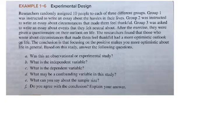In Example 1-6 on experimental design, we're going to look at the following research scenario and then answer some questions. Researchers randomly assigned 10 people to each of three different groups. Group 1 was instructed to write an essay about the hassles in their lives. Group 2 was instructed to write an essay about circumstances that made them feel thankful. And group 3 was asked to write an essay about events that they felt neutral about.